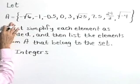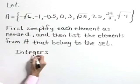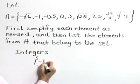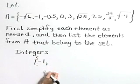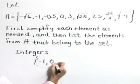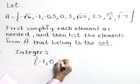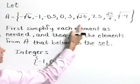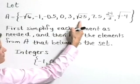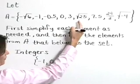So from A, if we pull out the integers, we're going to take out that value of negative 1, also 0 and 3, as well as the square root of 25, which simplifies to 5.